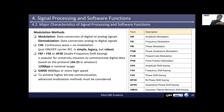In the case of GMSK (Gaussian filtered minimum shift keying), operating at 9600 Hz or higher speed, you may investigate reasonable ICs to realize the functions. To achieve higher bitrate communication, advanced modulation methods like QPSK or GMSK must be considered.